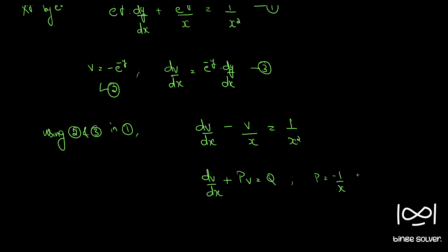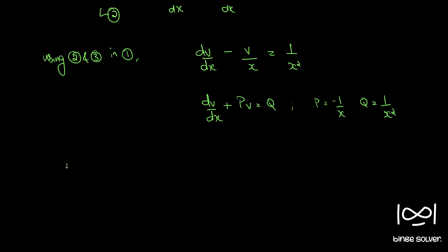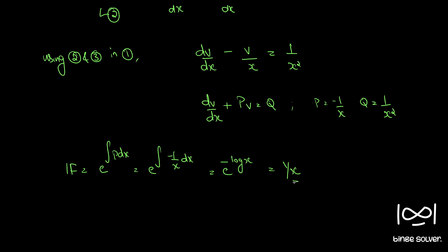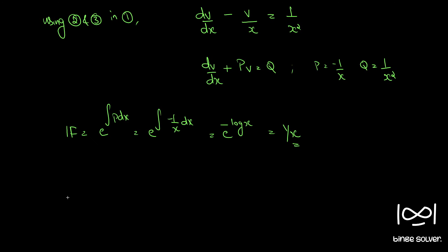Here P is minus 1 by x, and Q is 1 by x squared. The integrating factor is given by e raised to the integral of P dx, so e raised to integral of minus 1 by x dx, which gives e raised to minus log x, which is equal to 1 by x. So we have our integrating factor.